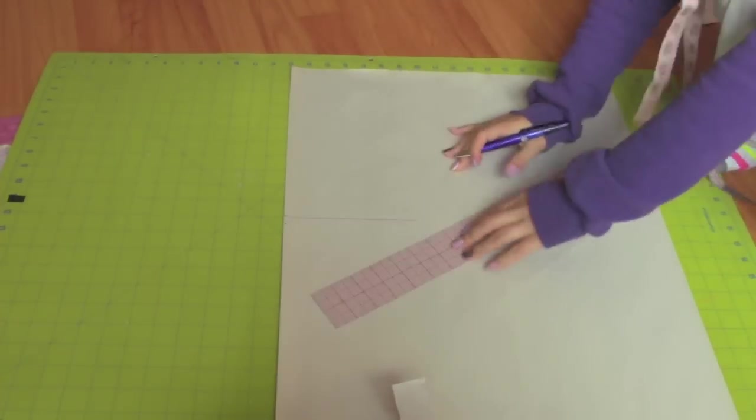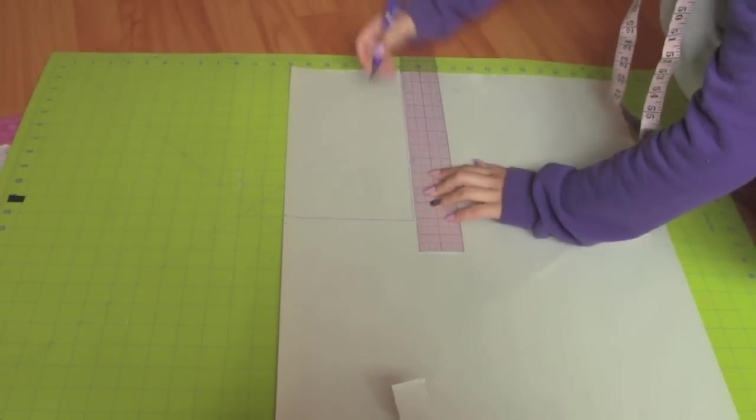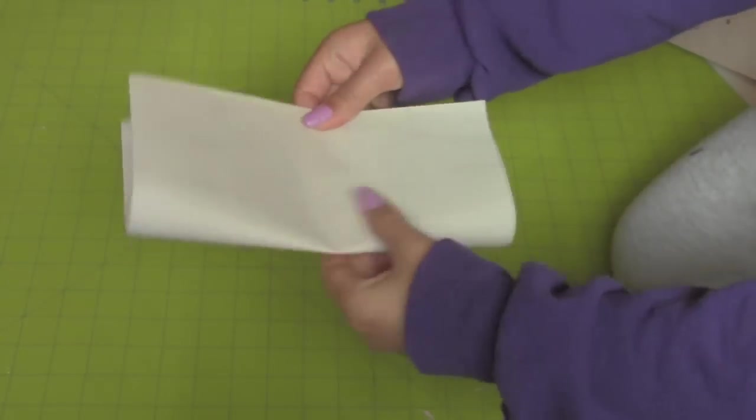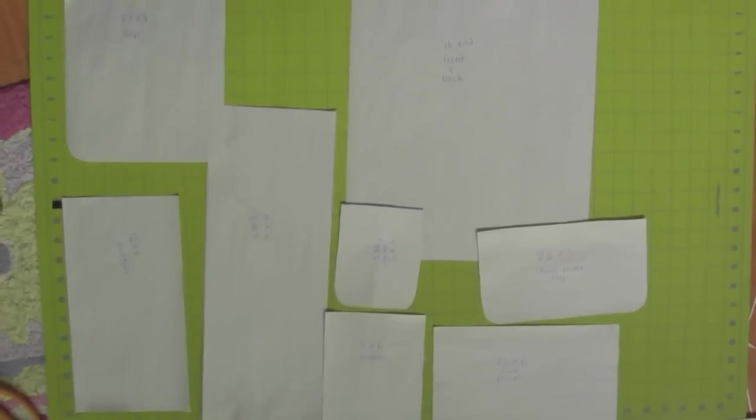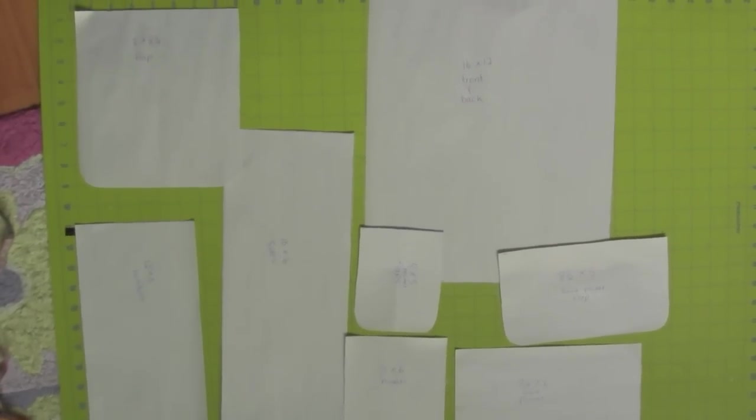Start by getting some wrapping paper or newspaper to make your pattern. I will list all the measurements I made in the description box. I included seam allowance in all the measurements except for the backpack flap.